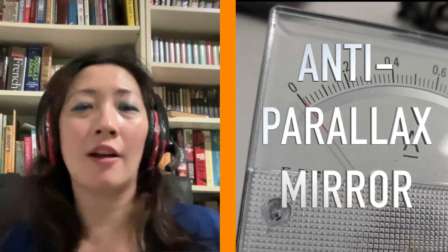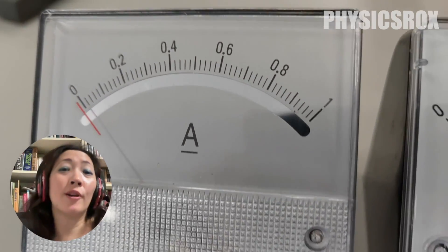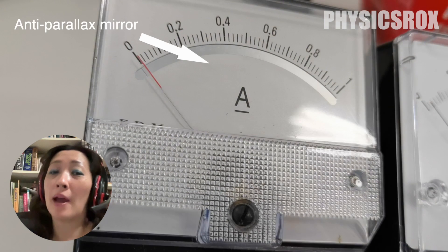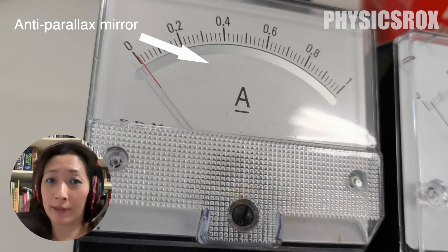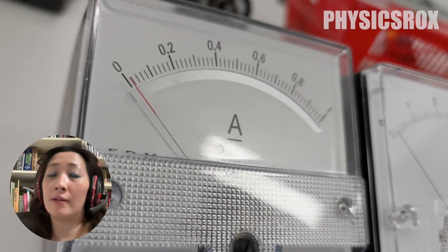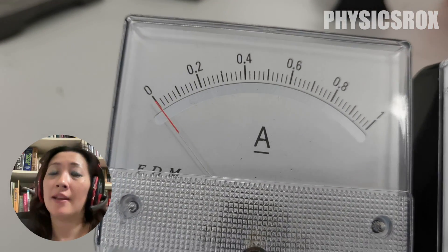In this video, I'm going to go through the concept of anti-parallax mirrors. We're going to look at an anti-parallax mirror that is usually found in ammeters and voltmeters. In this case, we're going to be looking at the anti-parallax mirror in the ammeter.